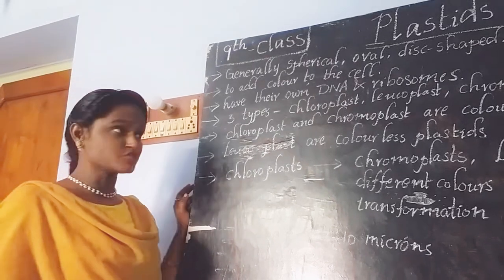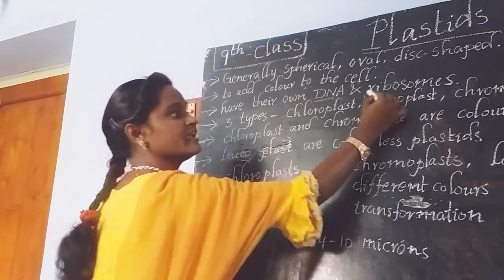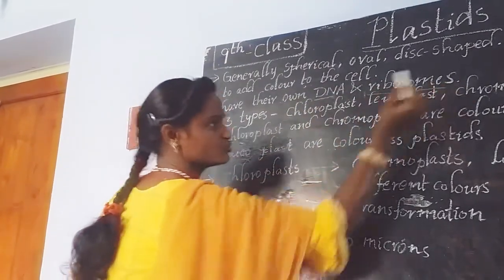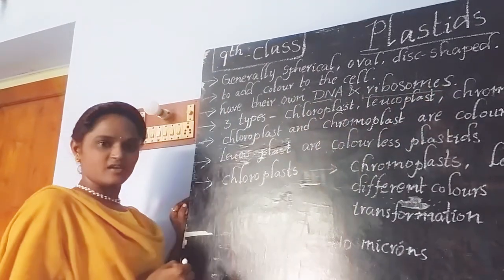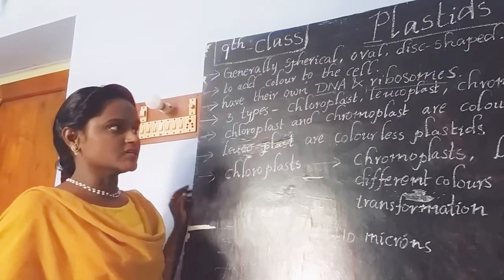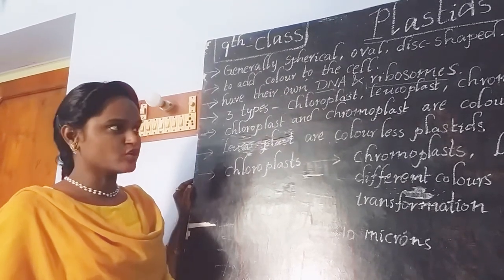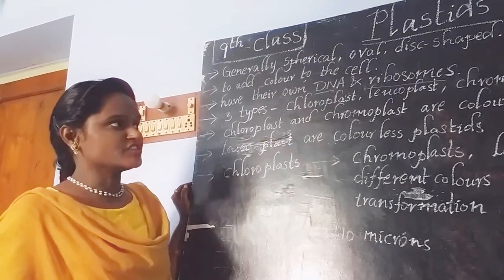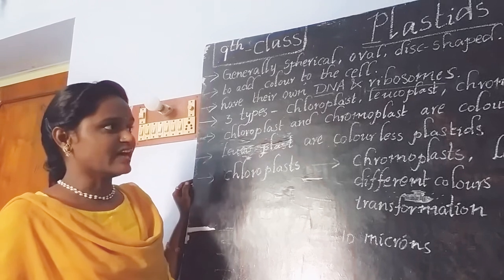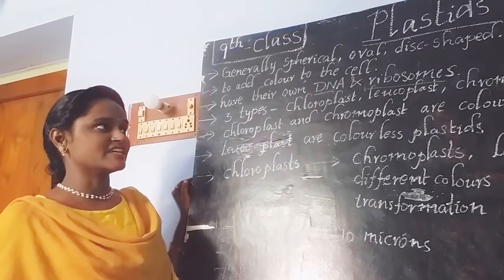The plastids themselves carry their own DNA and also ribosomes, just like mitochondria. They are capable of containing DNA and ribosomes. And depending on the function performed by the plastids, they are classified into three types.